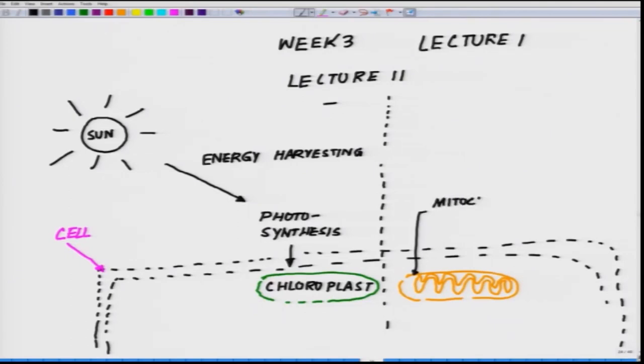Then you have another organelle close by which is your mitochondria, which is the powerhouse of the cell. This process generates a lot of energy rich molecules in the form of ATP, NADPH, GTP - the most critical one is ATP.